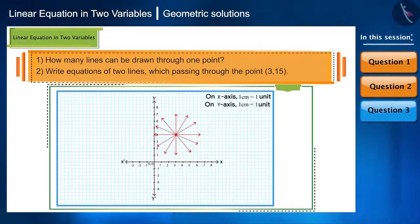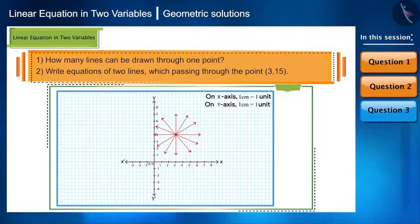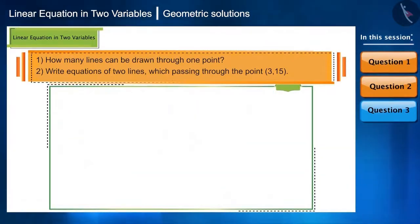And when countless lines can be drawn, all we have to do is write two such equations of lines which pass through the point 3 comma 15. Does this question seem difficult? The answers to these kind of questions can be derived from the given point itself.